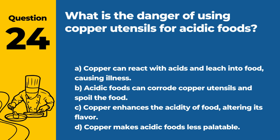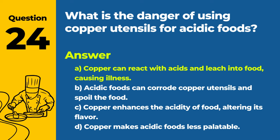Question 24: What is the danger of using copper utensils for acidic foods? A. Copper can react with acids and leach into food, causing illness. B. Acidic foods can corrode copper utensils and spoil the food. C. Copper enhances the acidity of food, altering its flavor. D. Copper makes acidic foods less palatable. Answer: A. Copper can react with acids and leach into food, causing illness. Using copper utensils for acidic foods is dangerous because copper can react with the acid and leach into the food, potentially causing illness.